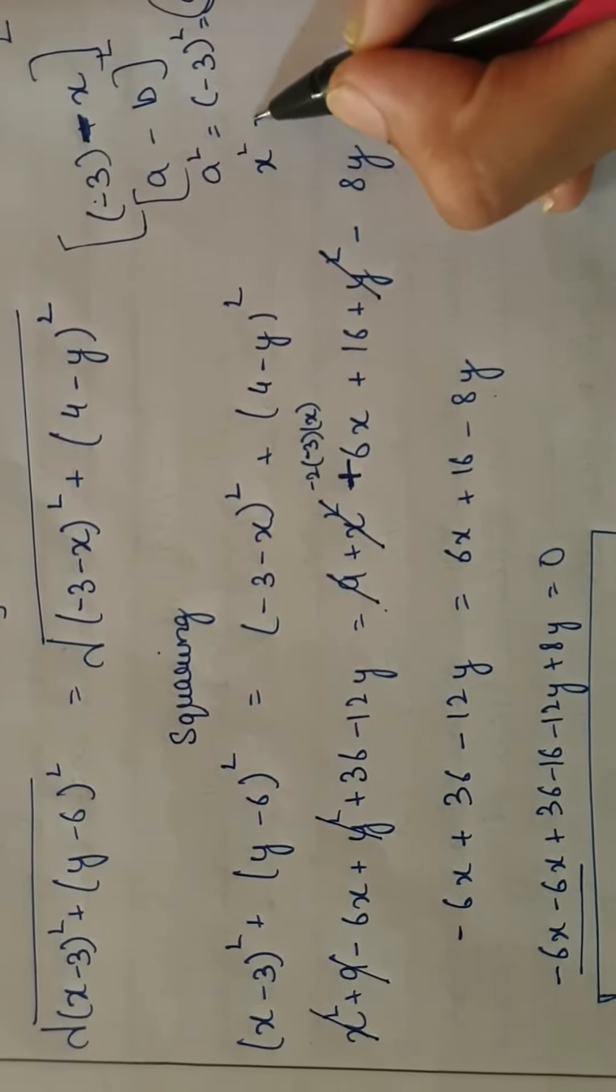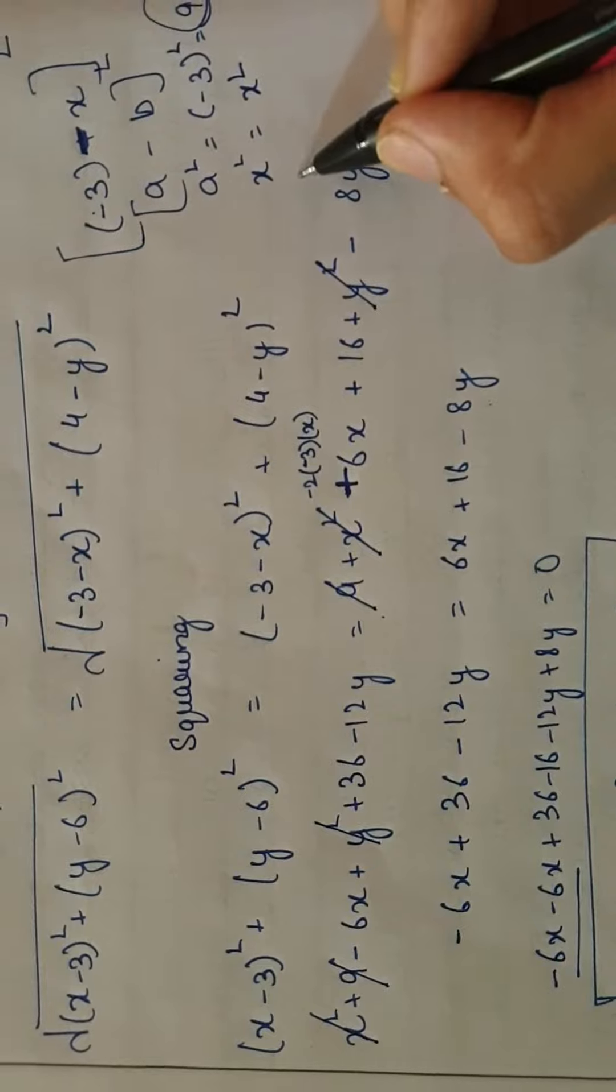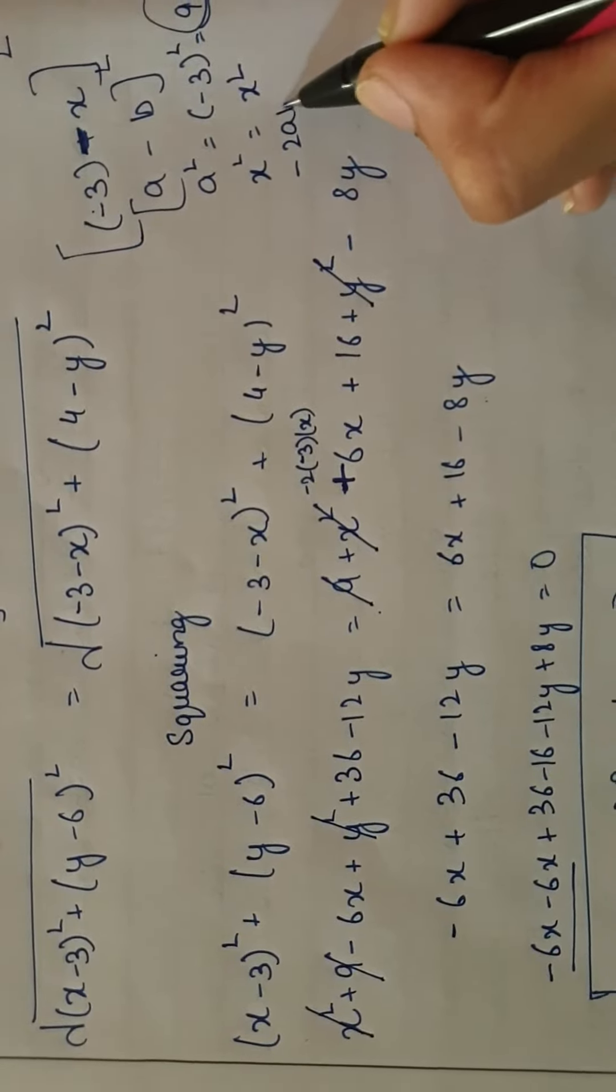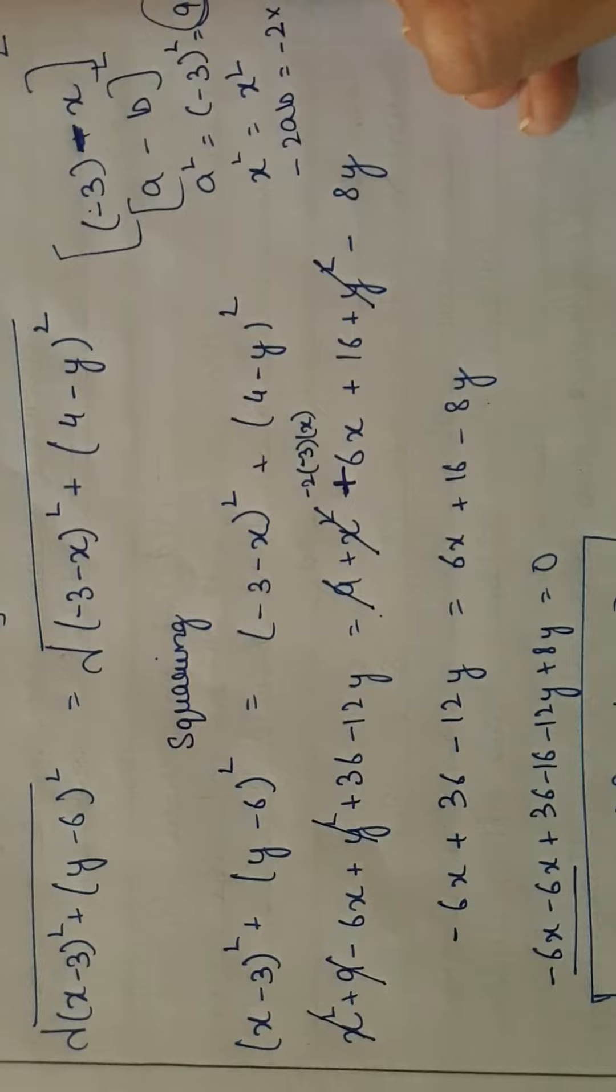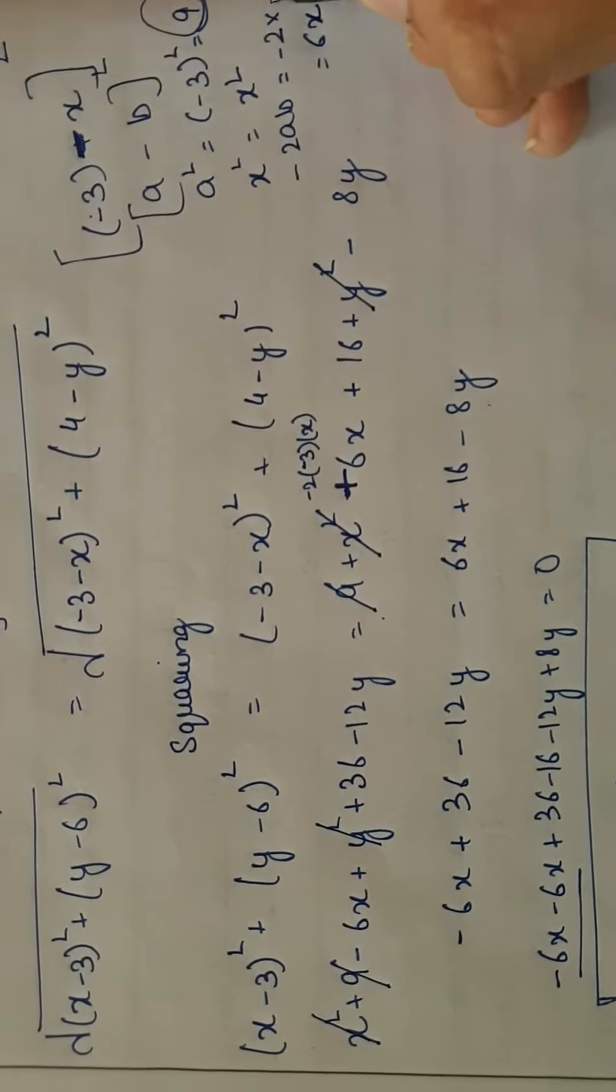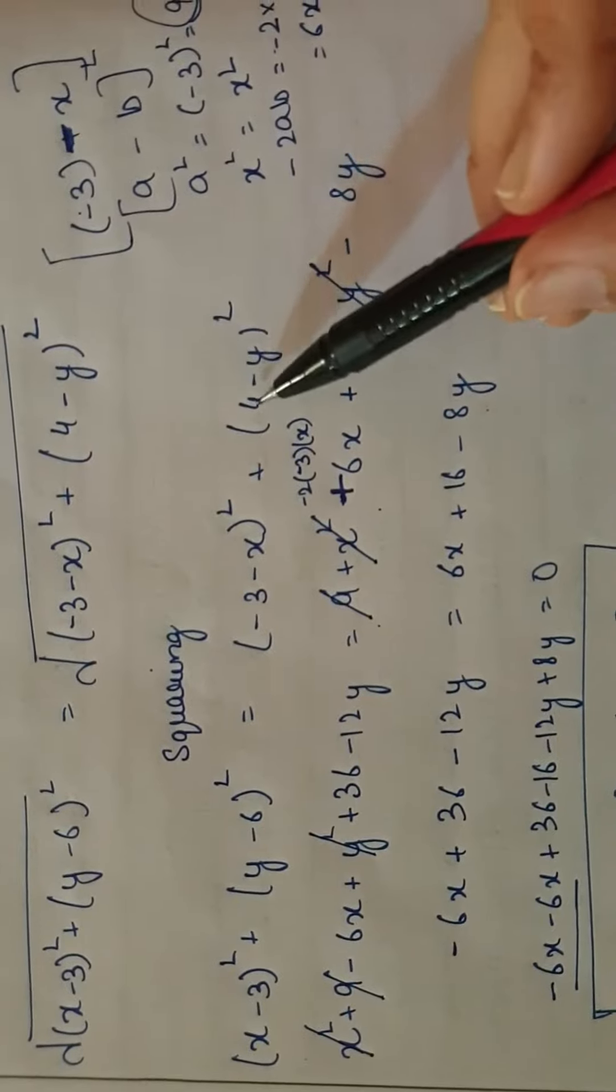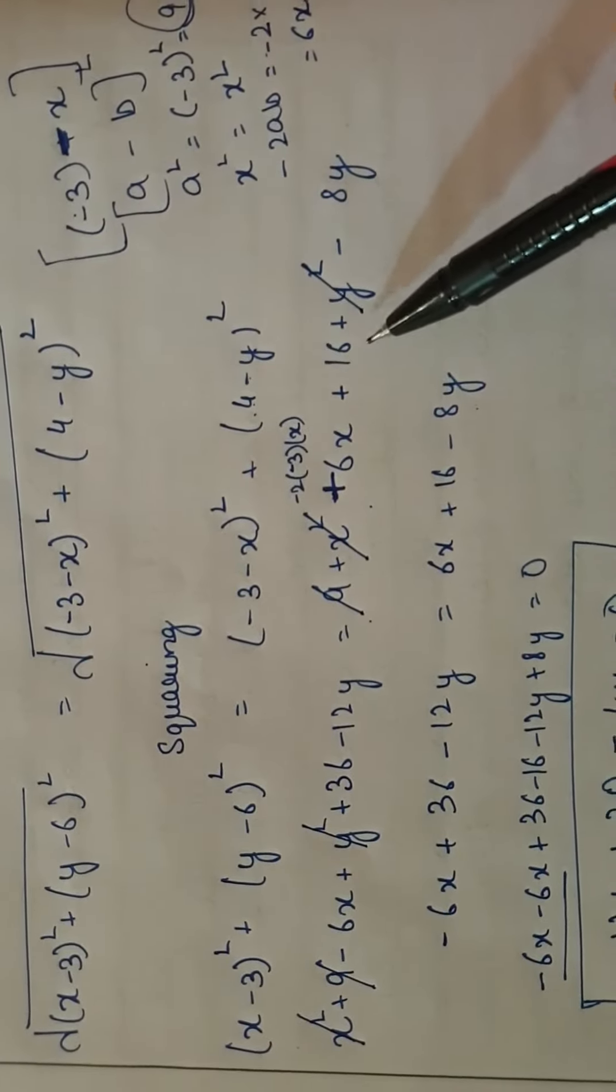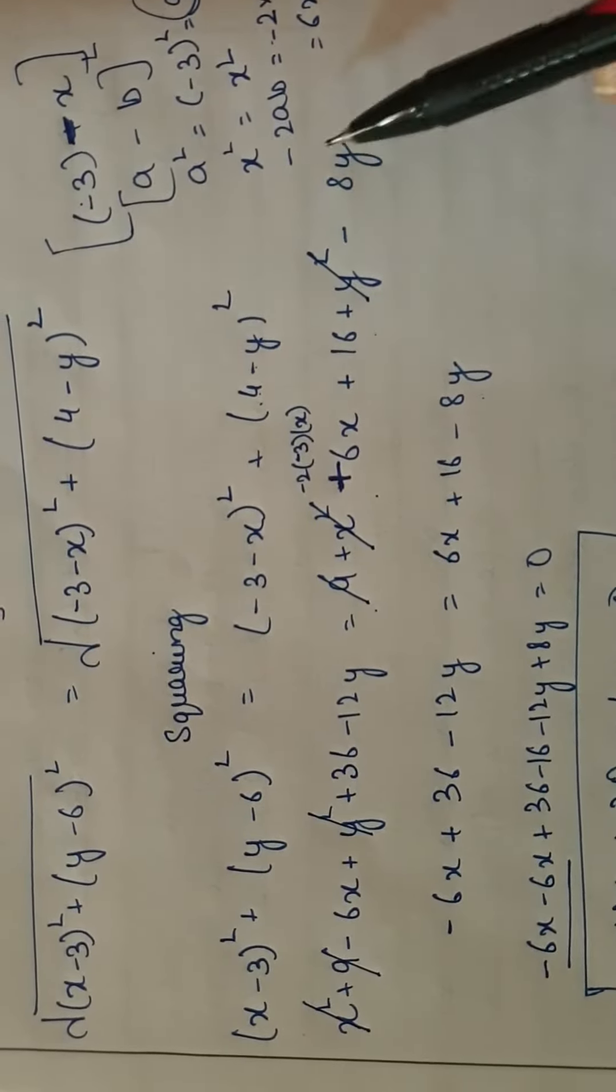Then x², and -2ab: -2 times a value -3 times b value x gives us 6x. Minus times minus is plus. Then (4-y)²: a² + b² - 2ab.